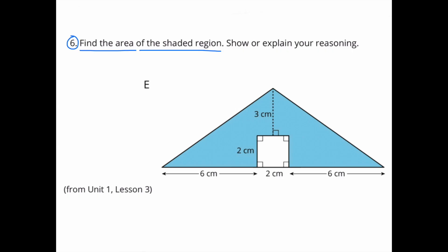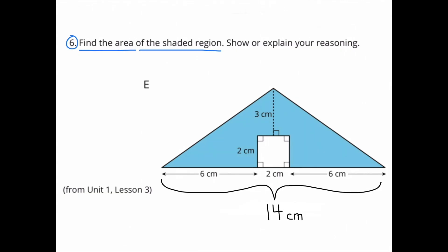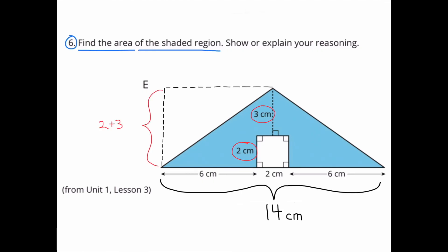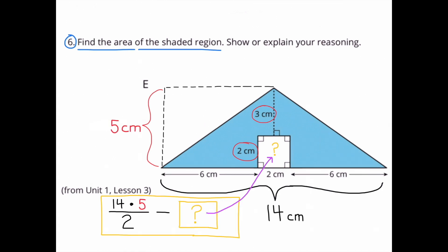Number 6: Find the area of the shaded region. Show or explain your reasoning. The shaded region has a base that measures 6 plus 2 plus 6, or 14 centimeters. The shaded region has a height of 2 centimeters plus 3 centimeters, or 5 centimeters.